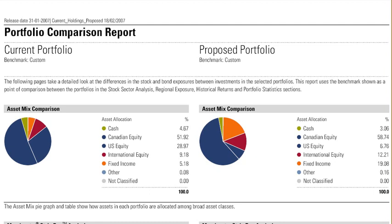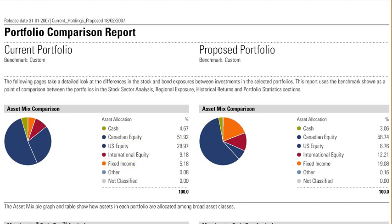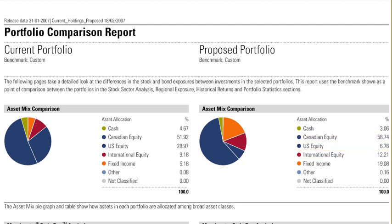The first section on this report is the asset mix comparison. Note that the client's current portfolio is predominantly invested in Canadian equity and hardly any in fixed income. The proposed portfolio has greater exposure to Canadian and foreign equity, and in addition, the proposed portfolio has a fixed income position.